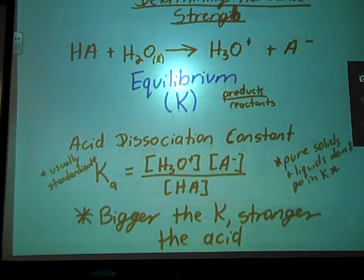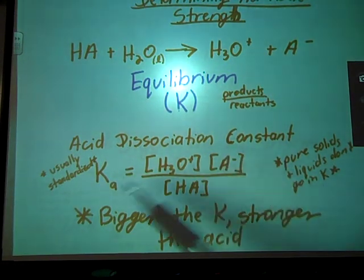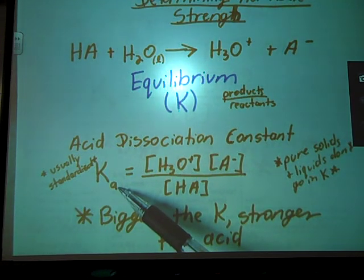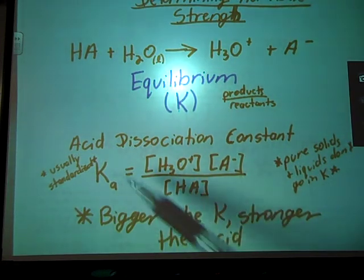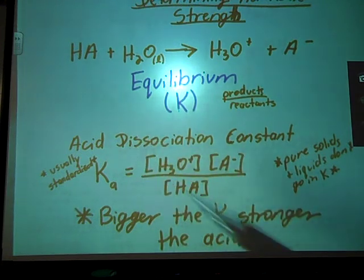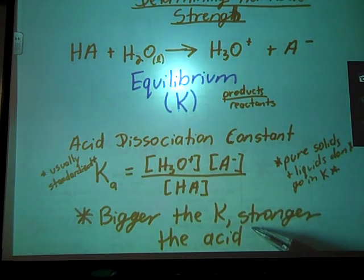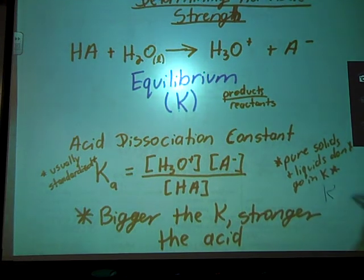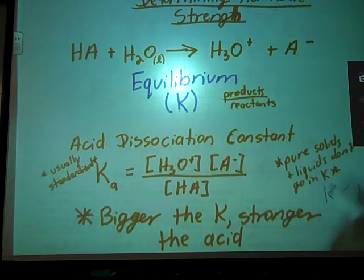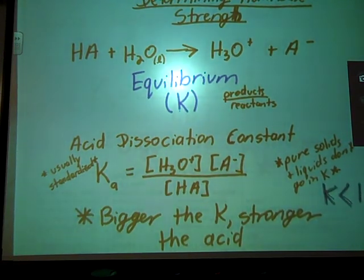If you remember back to a couple of videos ago, we said that strong acids and bases dissociate completely. So the closer your K gets to 1 and beyond, the stronger your acid. So for a strong acid, you're wanting greater than 1. So K's greater than 1. Let me write that in the marker so you can see it better.